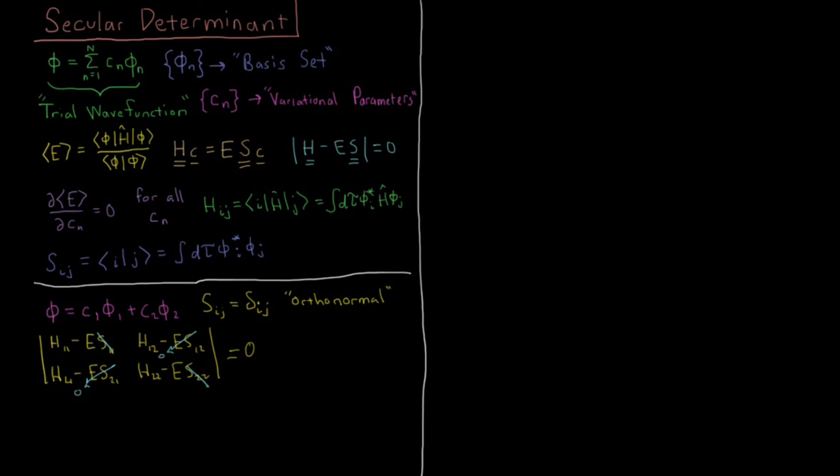So the thing we're left with is we just have H11 - E, H12, and because this matrix is Hermitian, we know that H12 has to be equal to H21, so this is also H12, that's a requirement of Hermitian operators, and then we have H22 - E. So this determinant is going to equal 0.